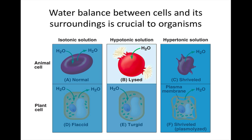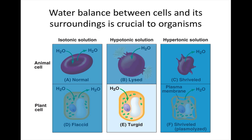In a hypotonic solution, the solution has a solute concentration lower than that of the cell. For an animal cell, the cell gains water, swells, and may burst like an overfilled balloon. The plant cell, however, can avoid lysis because of its strong cell wall and its ability to store water within its vacuole.